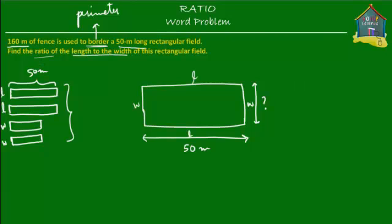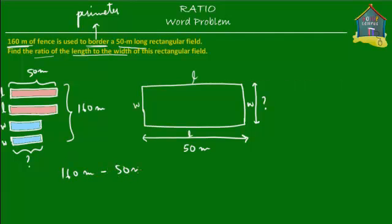We do know that the length is equal to 50 meters, so the two pink blocks are 50 meters each. What we do not know is what the blue blocks are equal to, but it's pretty simple to find out. The total perimeter is equal to 160 meters — the amount of fence used to border this rectangular field. So from 160 meters we subtract the two 50-meter blocks: 160 minus 50 is 110, and minus 50 is 60.